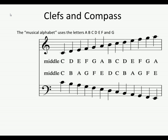We use what we call the musical alphabet. This is seven letters: A, B, C, D, E, F, and G. And these letters are repeated in that sequence.